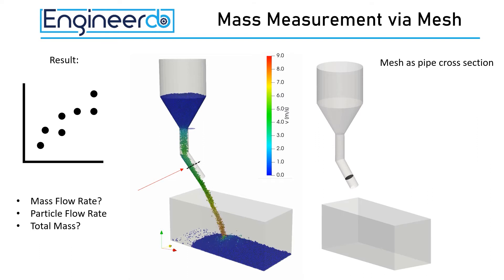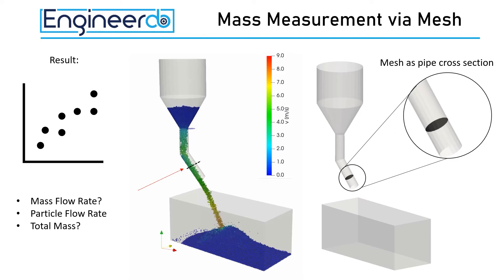We will use the same geometry like before. To analyze the flow rate of the bulk material stream inside the pipe we will add a mesh. This mesh corresponds to the cross sectional area of the pipe and can be loaded from a STL file like the geometry parts of the simulation.